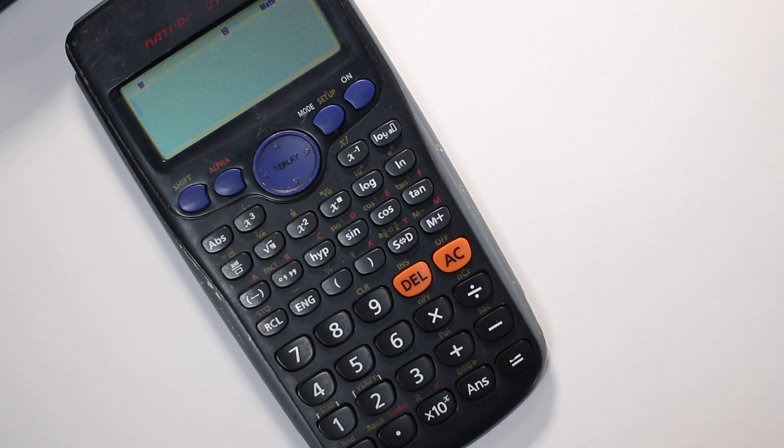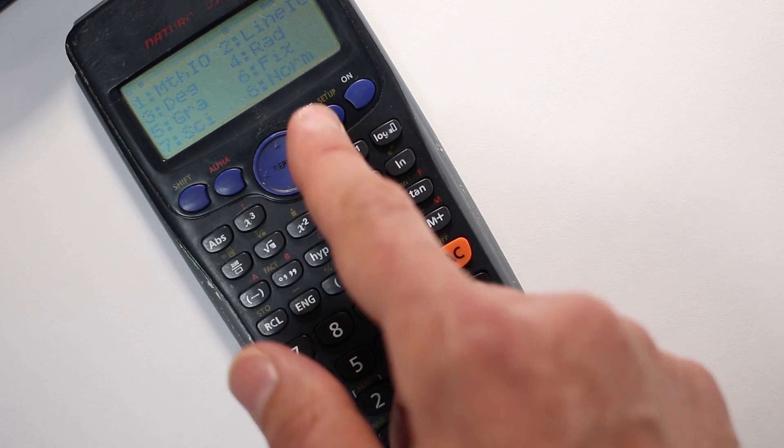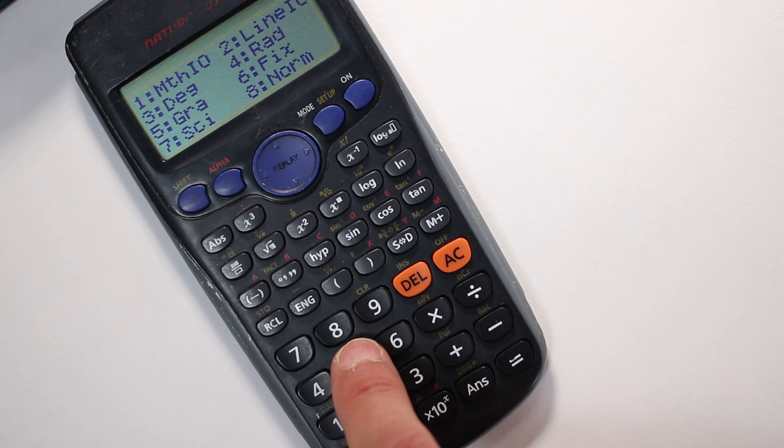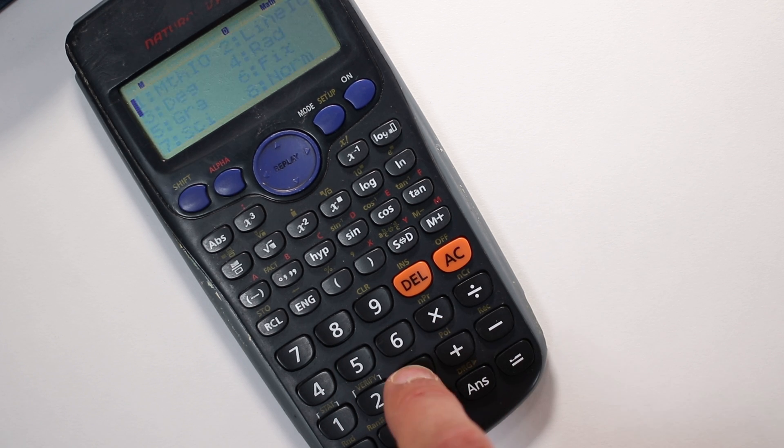If it isn't on degrees, the way to change it on these Casio calculators at least is you need to go into Setup, which you do Shift and then Setup. Can you see there, number three represents degrees, number four is if you want radians, and five is if you want gradients. So if you press number three for degrees, there you go, it's on to D. So tip number three, make sure your calculator is set to degrees.